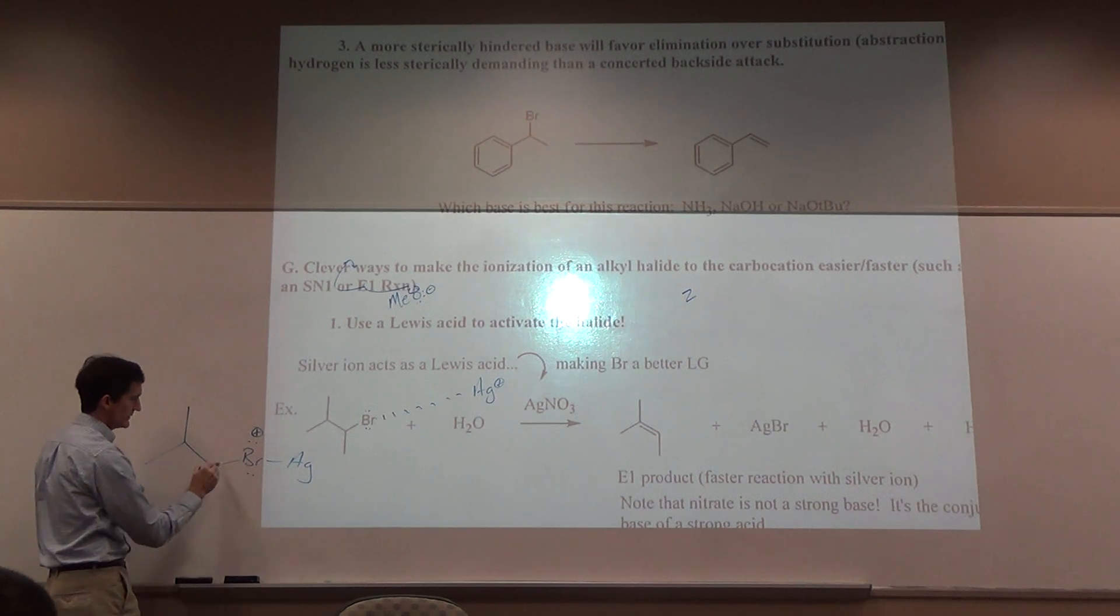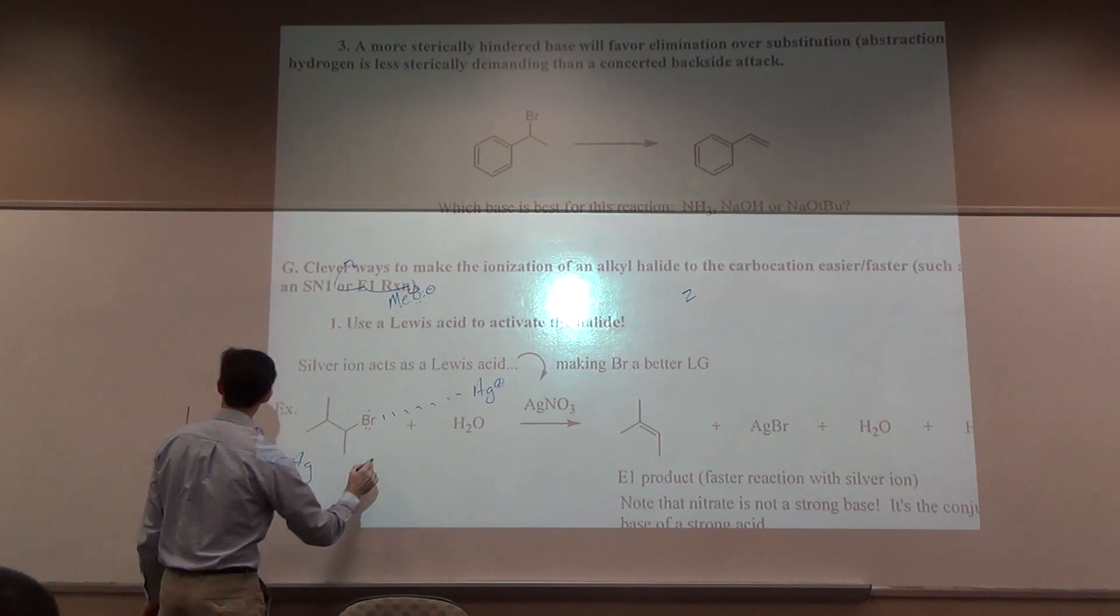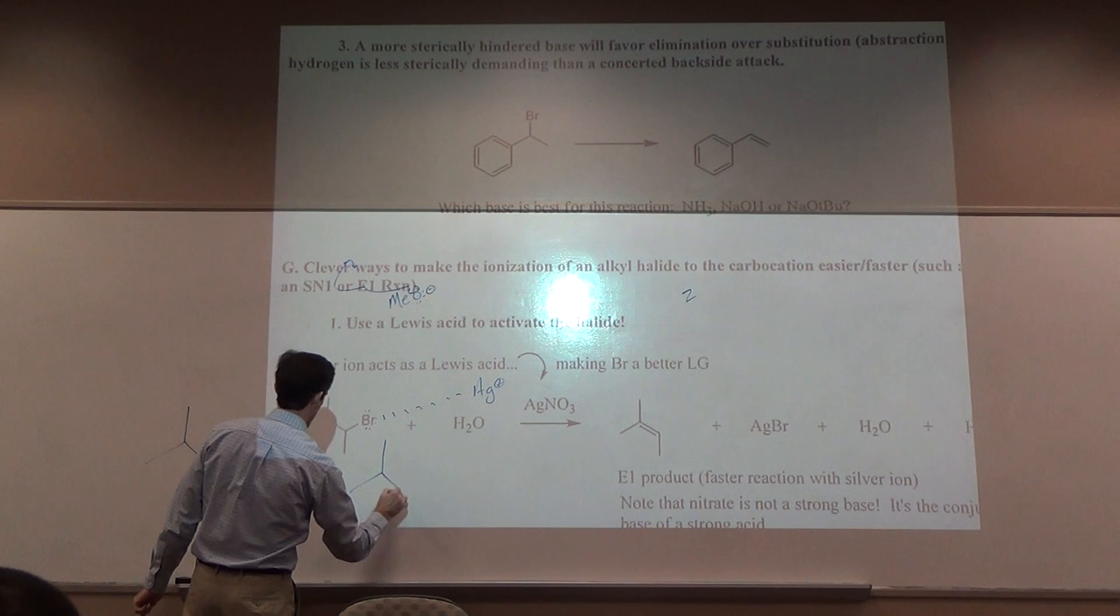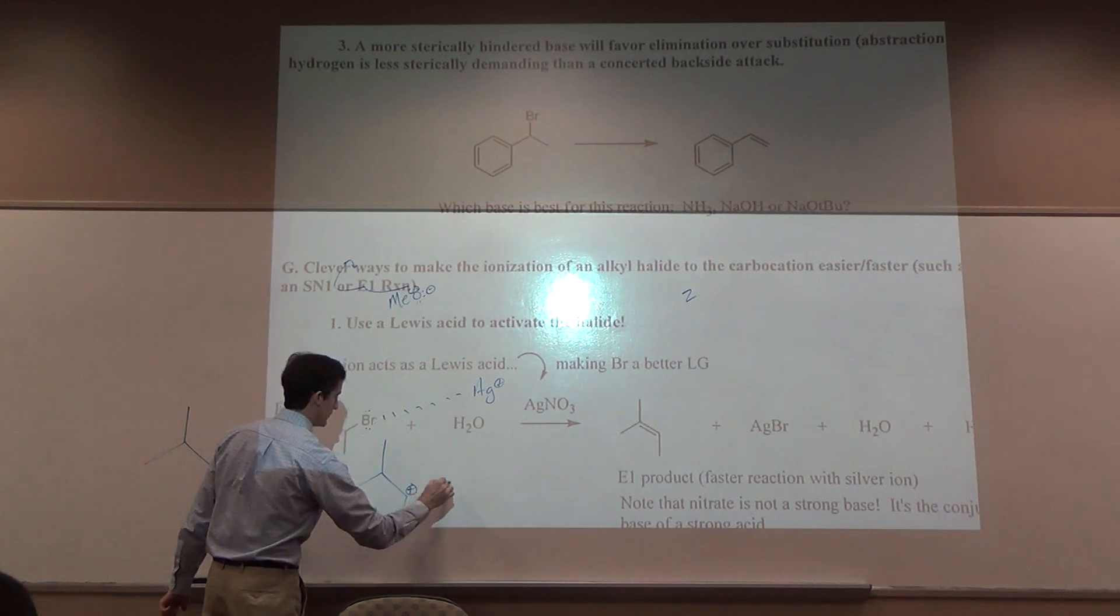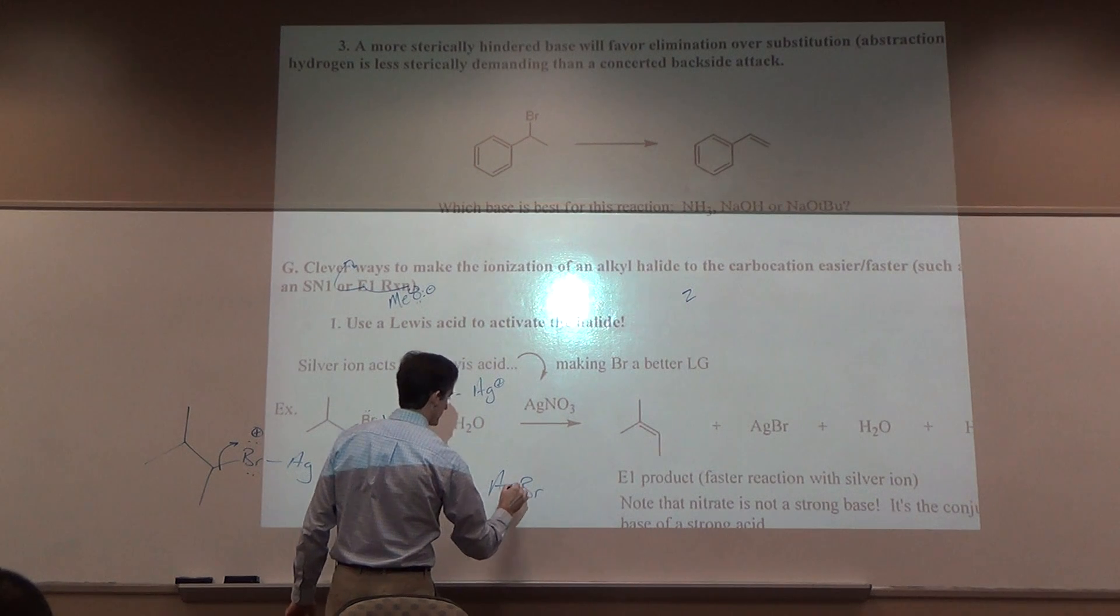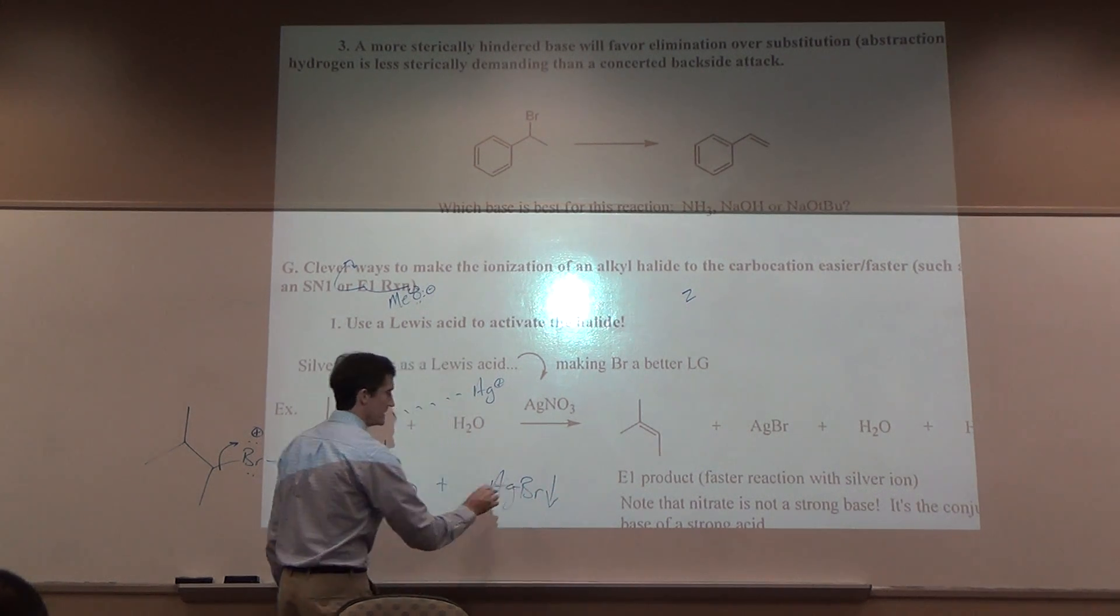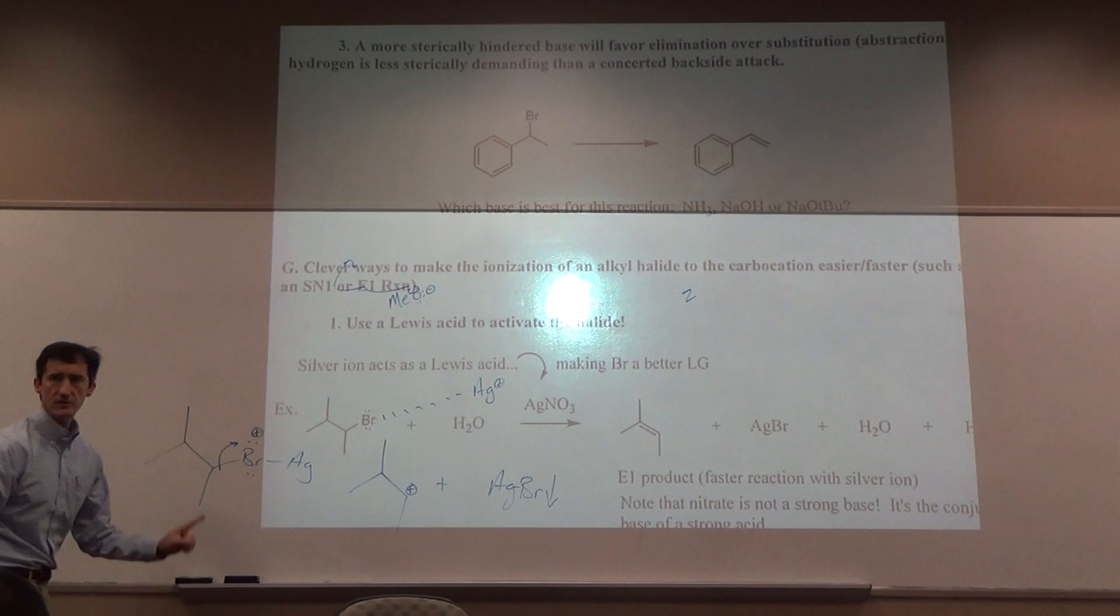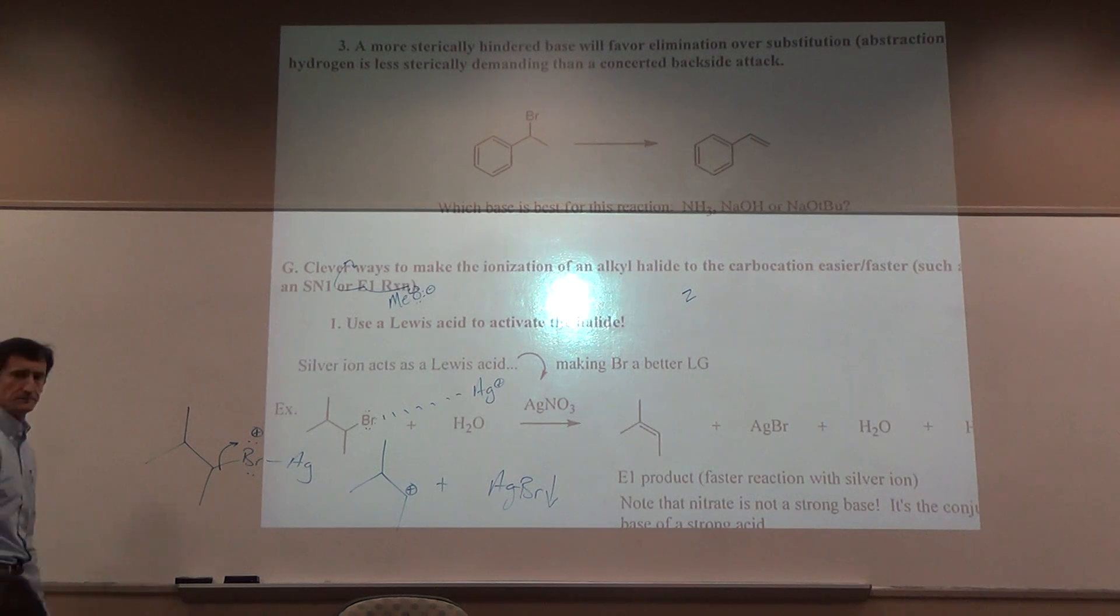You can show this. At this point, this ionizes off. And you get the carbocation plus what? Plus silver bromide. And that's a precipitate because that's usually insoluble. And we saw that in the lab two weeks ago.